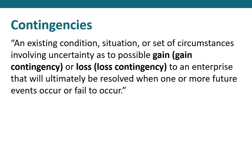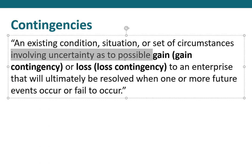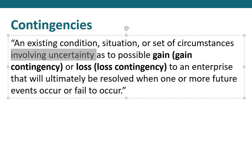There are three key parts here. First, it's an existing condition — something has already happened. Second, it involves uncertainty as to a possible future outcome. And third, the gain or loss will be resolved when future events either occur or fail to occur. So it's an existing condition involving uncertainty, relating to events that will either occur or fail to occur in the future.